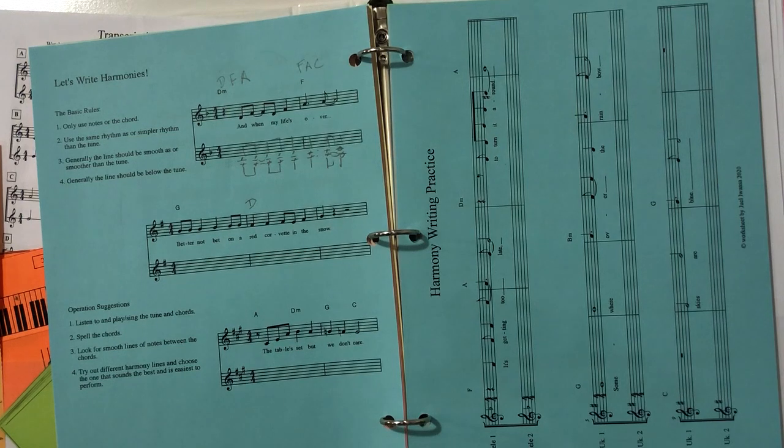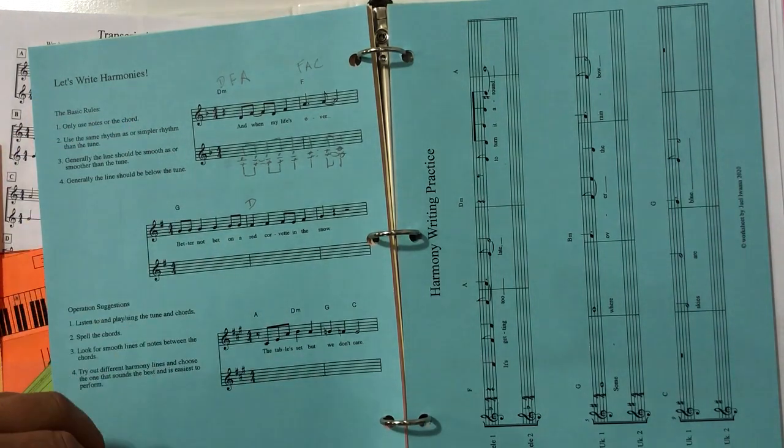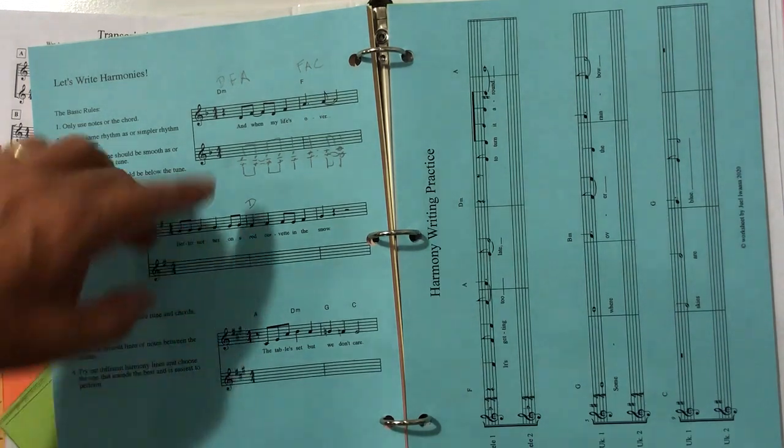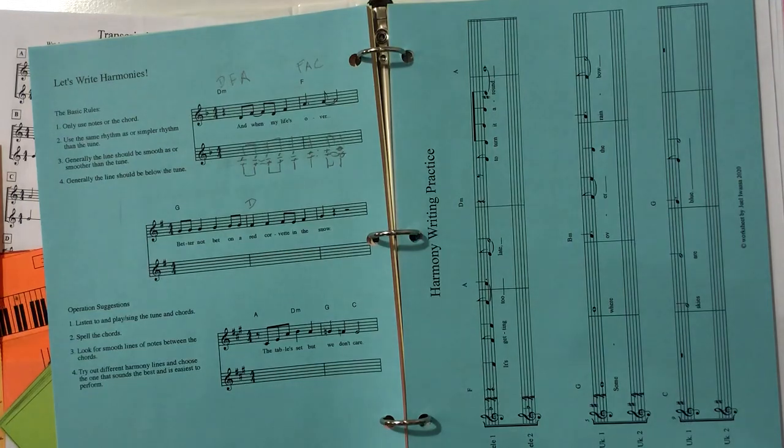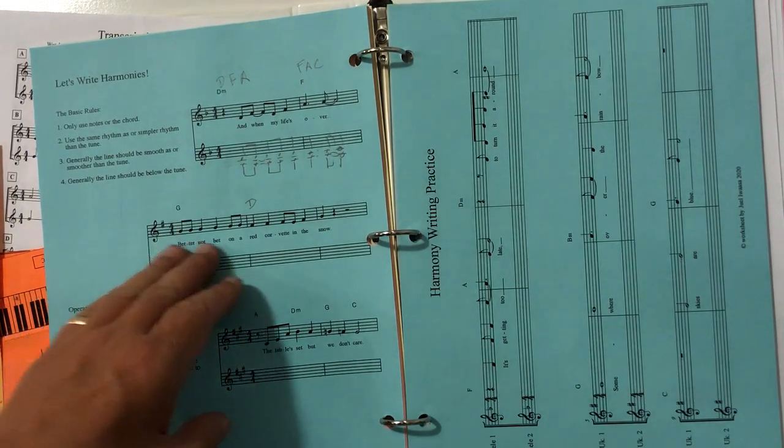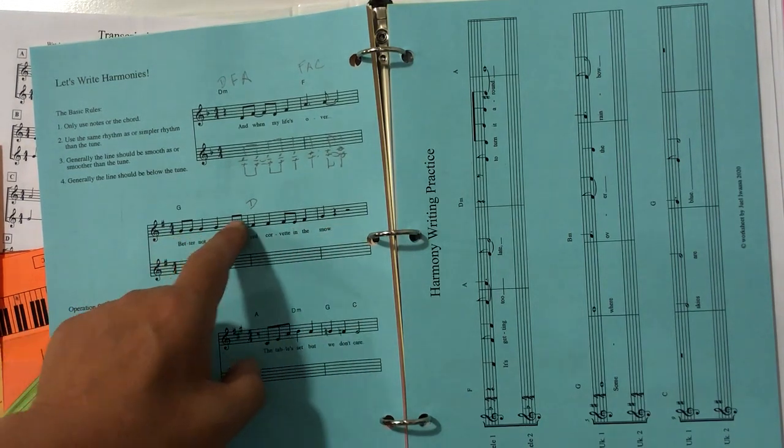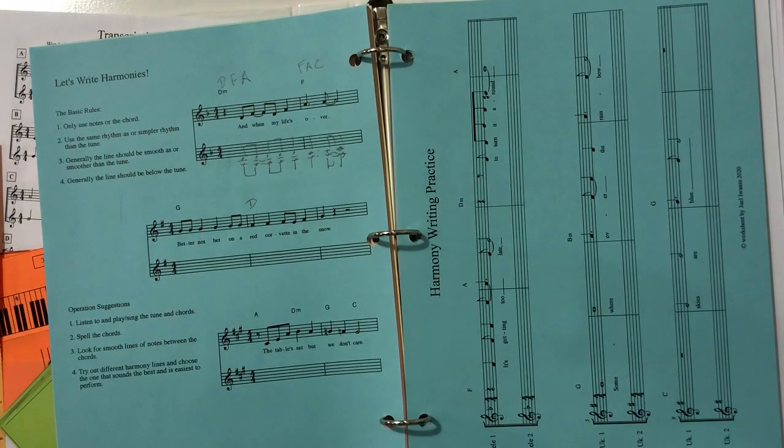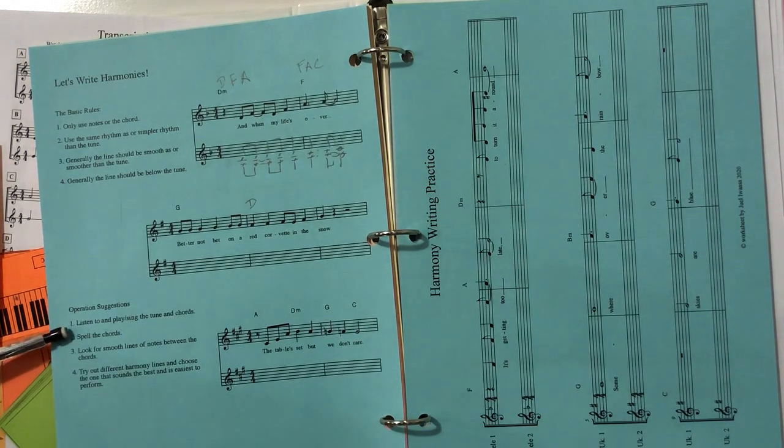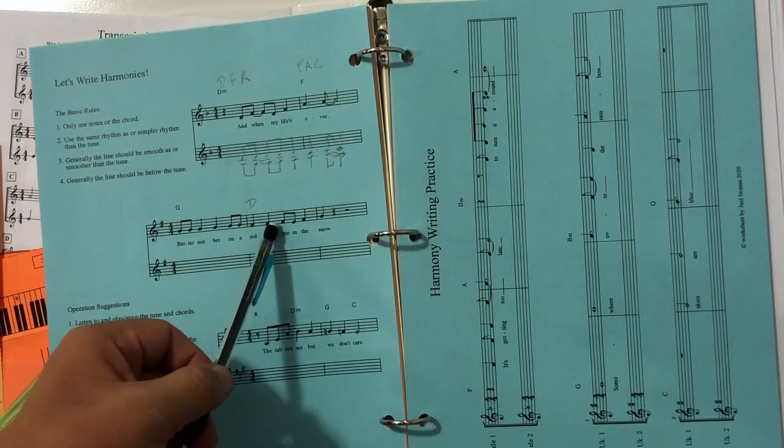All right. So this is. Better not bet on a red Corvette in the snow. That's what that is. So. Better not bet on a red Corvette in the snow. Right. By the way, not to do anything with harmonies, but just from a writing point of view, notice that when something is slower, you can do more things with the contour. But when stuff is going faster, it's hard to be agile, jumping up and down. And so in this case, I conceived of this one as a faster line so that stays on one note or just close notes the entire time. First step. Listen to, play and sing the tune in chords. We've got that in your head. Better not bet on a red Corvette in the snow.